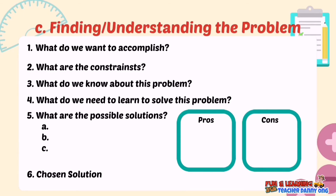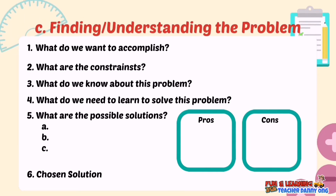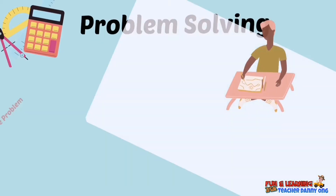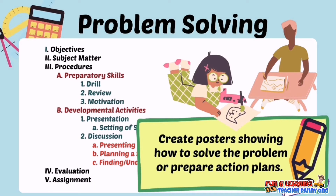The guiding questions I typically ask are: What do we want to accomplish? What are the constraints? What do we know about this problem? What do we need to learn to solve it? Then students write possible solutions and analyze the pros and cons of each, before choosing the best solution. For the evaluation phase, performance-based assessments are recommended — for example, having students create posters showing how to solve the problem or prepare action plans.